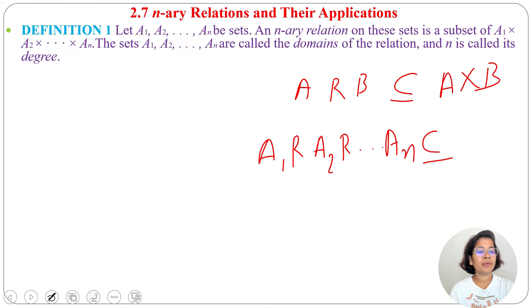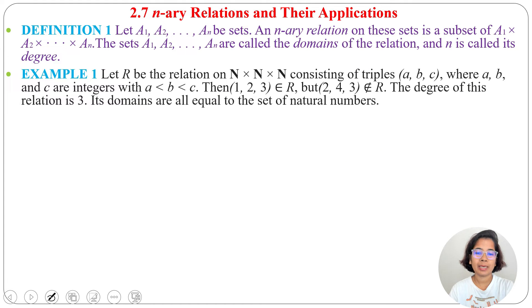Now an example of n-ary relation: Let R be the relation on ℕ × ℕ × ℕ, where ℕ means natural numbers, consisting of triples (a, b, c) where a, b, and c are integers with a < b < c. Then (1, 2, 3) belongs to the relation as 1 < 2 and 2 < 3.